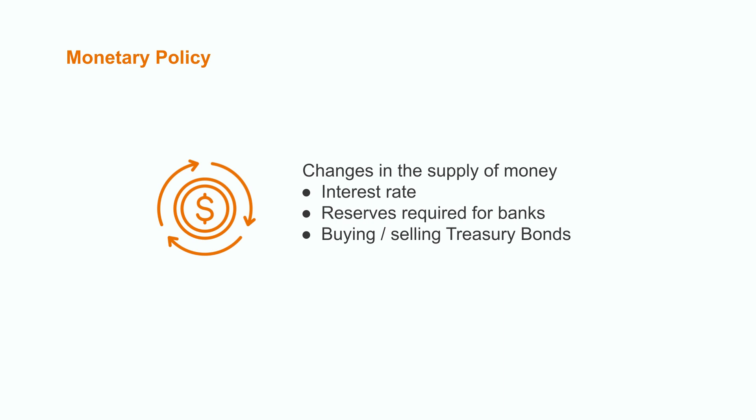Monetary policy involves changes in the supply of money. To maintain a constant pace of money growth, the government implements monetary policies. This aids in reducing excessive short-term growth and inflation, both of which have the potential to harm long-term growth. To alter the supply of money, a government may, for example, change its actual monetary base — like altering the reserves required for banks — or buying and selling treasury bonds, or it can also alter the interest rate.